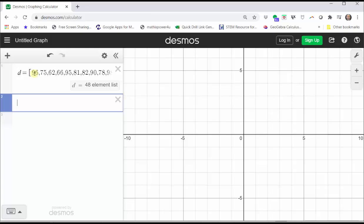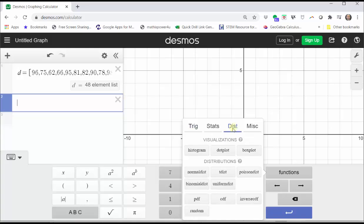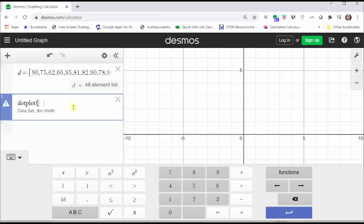Now let's create the dot plot. We can either type in dot plot, or go back to the Desmos keypad, click Functions, click Distribution, and click dot plot. Notice how Desmos is telling us to enter the data set comma the bin width.